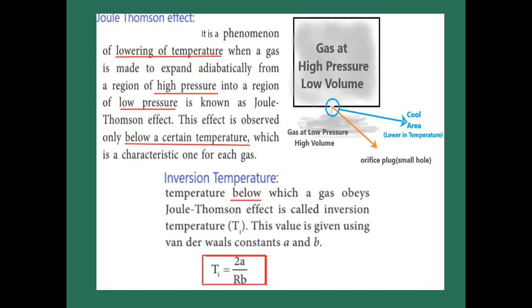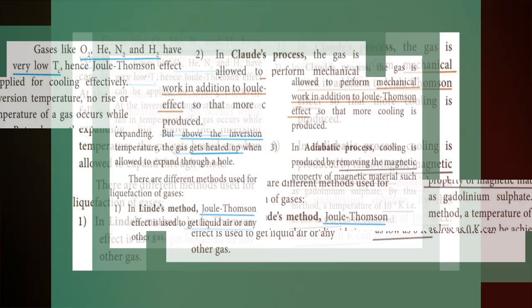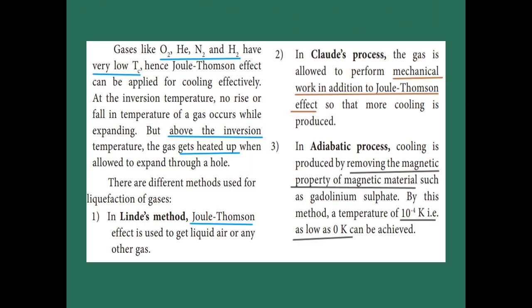Inversion temperature is the temperature below which a gas obeys the Joule-Thomson effect. The formula for inversion temperature is Ti = 2A / Rb. The Joule-Thomson effect is effectively used for oxygen, helium, nitrogen, and hydrogen gas because they have very low critical temperatures. Please do not confuse critical temperature and inversion temperature — they are different.